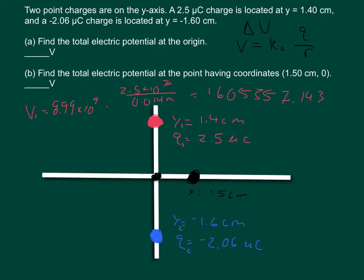Then we're going to do V2, so V2 is equal to Ke times, and since our charge is negative we have to put negative 2.06 times 10 to the negative 6 coulombs, divided by... Now here's the kicker. I know that our y location is negative 1.6, however,